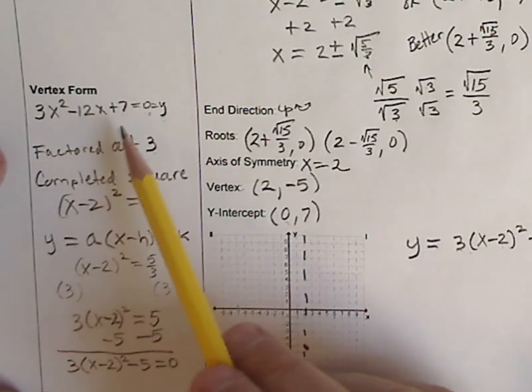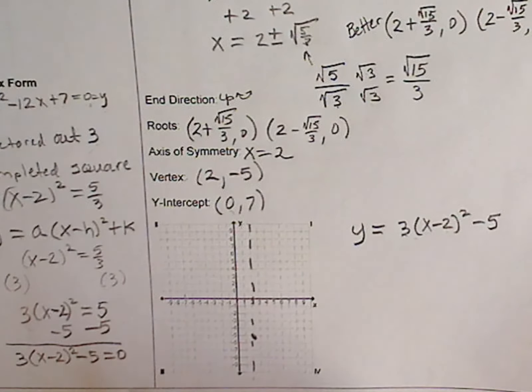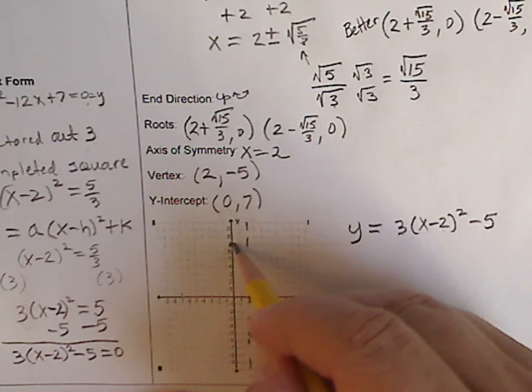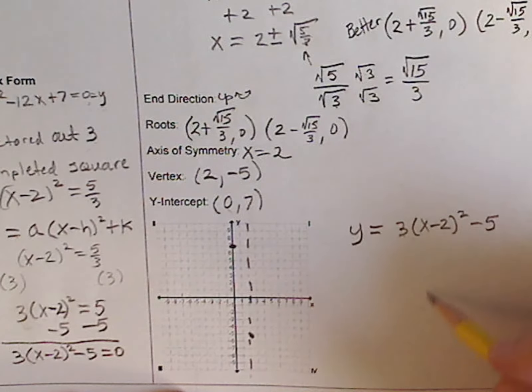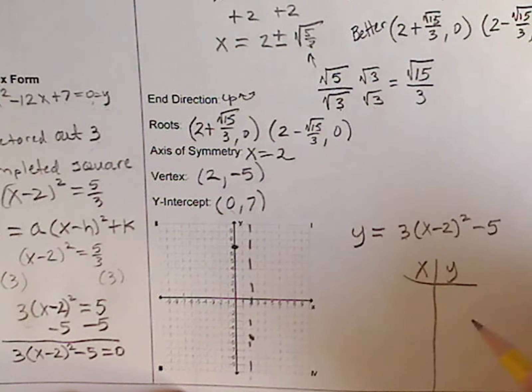This is when it's in standard form. This is when it's in vertex form, sometimes referred to as graphing form. I'm almost done, because I know that 0 and 7 are here. But to get a good graph, I need to do a little t-chart.